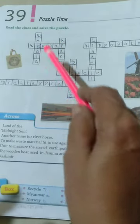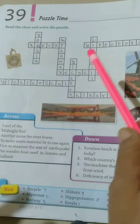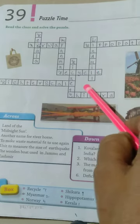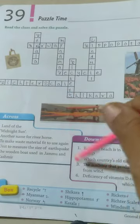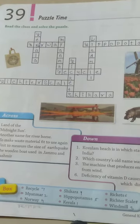Okay. Now fifth one, another name of the river horse. Fifth one, where is fifth one? River horse. Hippopotamus.